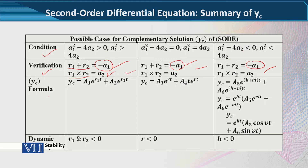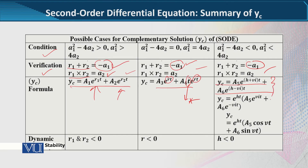اس کے بعد yc کا formula distinct real root case میں یہ ہوتا ہے جہاں دو parts ہیں r1 اور r2 کے لیے. Equal real roots کے case میں دو roots ایک جیسے ہیں لیکن ایک additional t term ہے جو ہم بھول سکتے ہیں but we should not forget that. Complex roots کے case میں complementary function کے formulas ایک سے زیادہ ہیں: ایک standard طریقہ، دوسرا common factor لے کر، اور تیسرا trigonometric form میں.